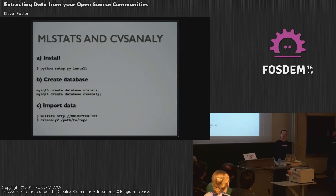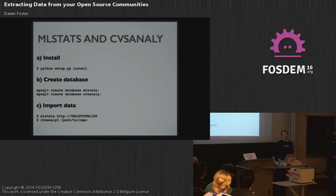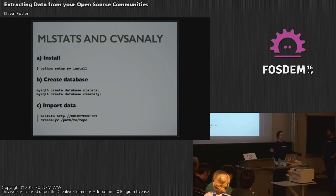They're super easy to use. They're written in Python — you just install them, it's not that hard. Create a couple of databases and then you import the data. There are a few more configuration options you can use, like where your database is. mlstats takes as its argument the URL where your mailing list archive is stored. CVSAnaly takes as its argument the path to the repository you've cloned wherever you're running this command. It takes all this data and stores it in a database.